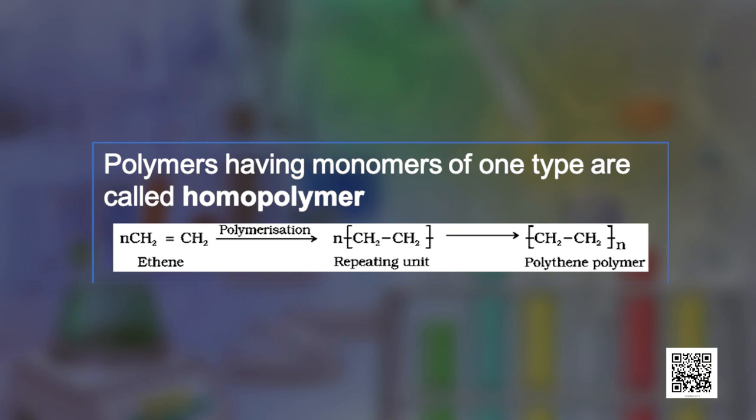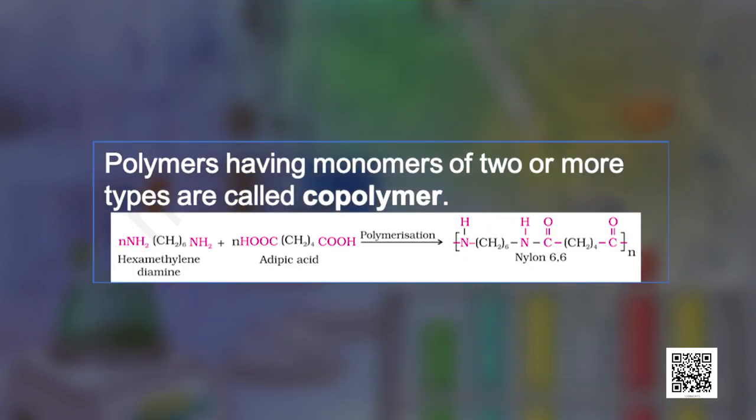Polymers having monomers of one type are called homopolymers. The transformation of ethene to polythene is an example of homopolymerization. Polymers having monomers of two or more types are called copolymers. The interaction of hexamethylene diamine and adipic acid leading to the formation of nylon 6-6 is an example of copolymerization. You would be amazed to know that the process of copolymerization has been used by nature as well.